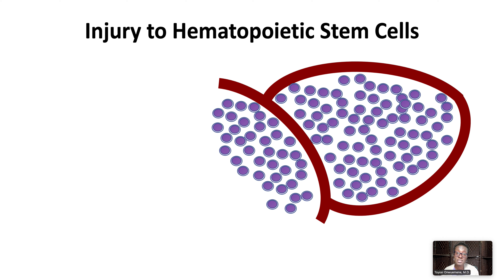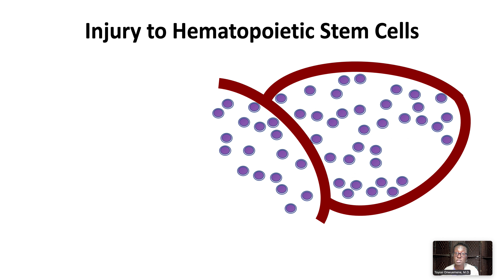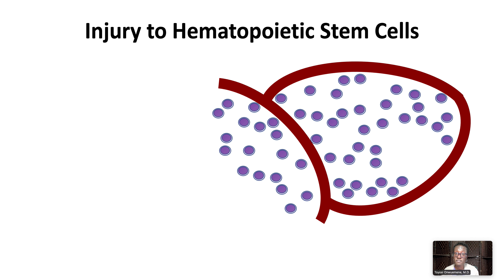This leads to the absence of hematopoietic stem cells and bone marrow hypoplasia, manifested clinically as anemia, neutropenia, and thrombocytopenia.